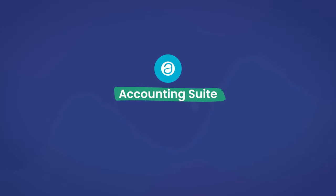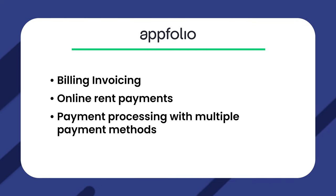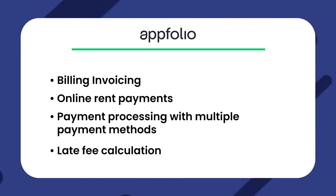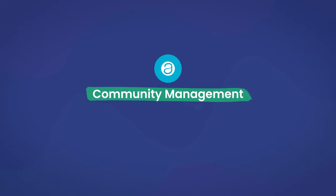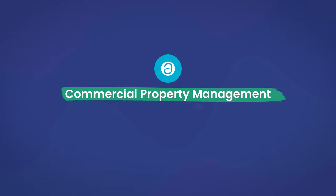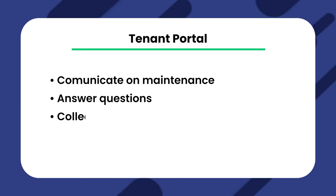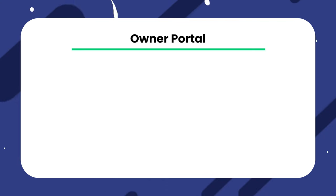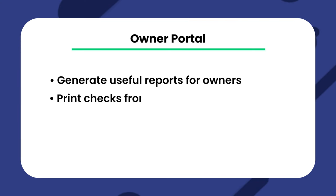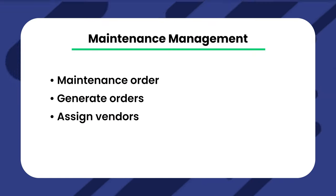First is the accounting suite. AppFolio includes a suite of accounting features including billing and invoicing, online rent payments, payment processing with multiple payment methods, and late fee calculation. Community management: if you manage an HOA or condo or multifamily community, you can make use of the calendar, committee, and event management features. Commercial property management: commercial property managers can take advantage of features like commercial leases and lease management. A tenant portal lets you communicate with tenants on maintenance, answer questions, and collect rent payments. An owner portal lets you generate useful reports for owners and even print checks from one central location. Maintenance management lets you communicate with tenants on maintenance orders, generate orders, and assign vendors.